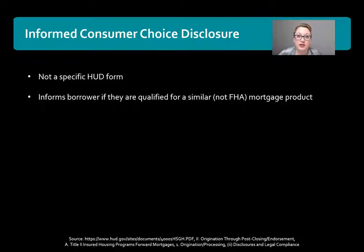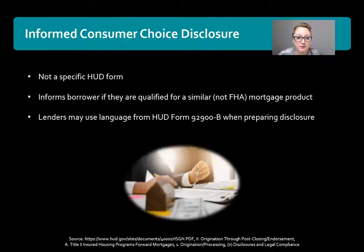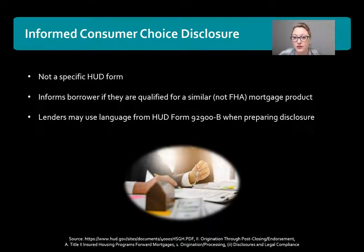So if the customer is choosing to do an FHA mortgage but they also qualify for a conventional, then the lender is responsible to let the borrower know that. Lenders can use language to create this form from the HUD form 92-900-B when they're preparing the disclosure.